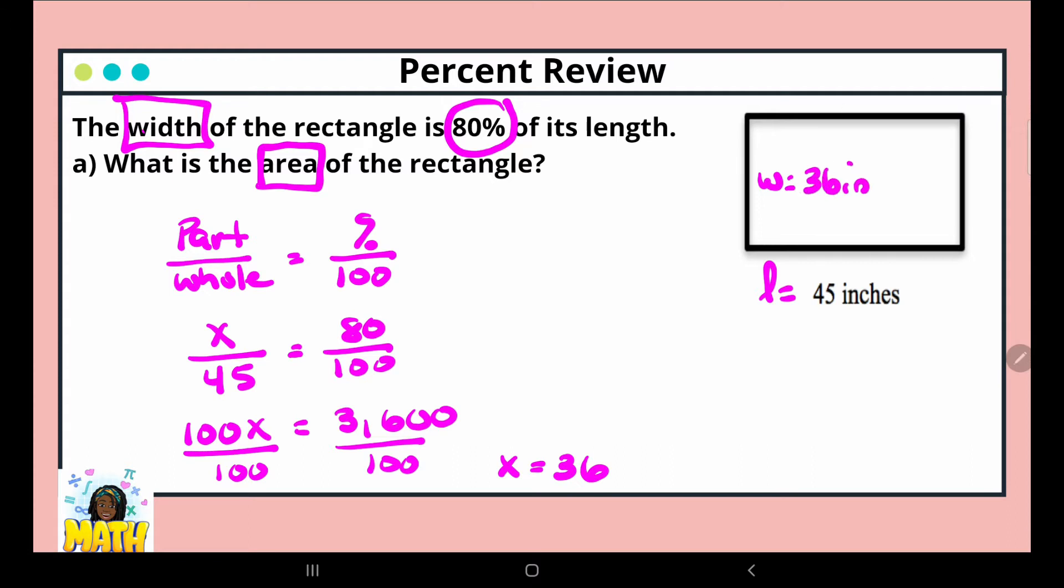So the width for this example is 36 inches. Now let's calculate the area. Area equals length times width, so that's 45 times 36. The product of 45 times 36 is 1,620 inches squared.